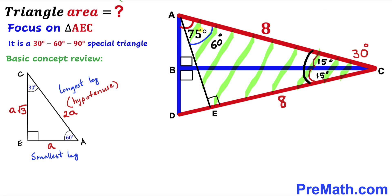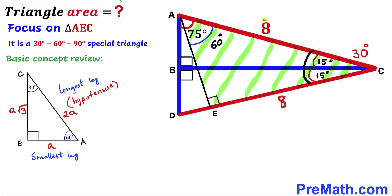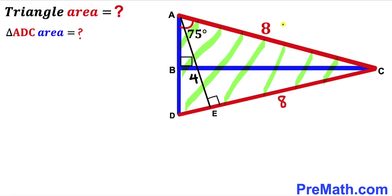Reverting our attention back to the original problem, perpendicular AE is our smallest leg since it is opposite to the 30 degrees angle, whereas side AC is our longest leg since it is opposite to the 90 degrees angle. Therefore the longest leg is twice the smallest leg — if AC is 8 then AE has got to be 4 units.